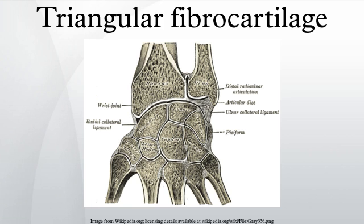The peripheral portion of the TFC is well vascularized, while the central portion has no blood supply. This disc is attached by thick tissue to the base of the ulnar styloid, and by thinner tissue to the edge of the radius just proximal to the radiocarpal articular surface.